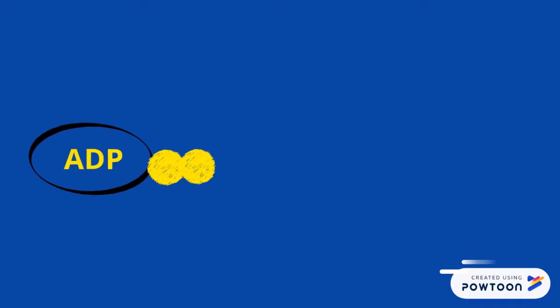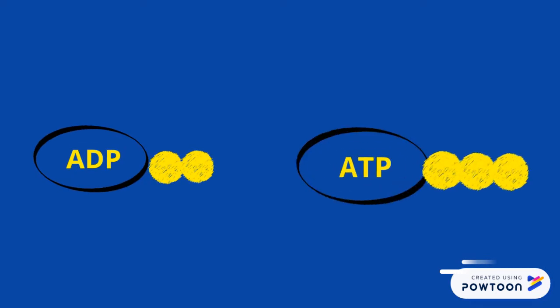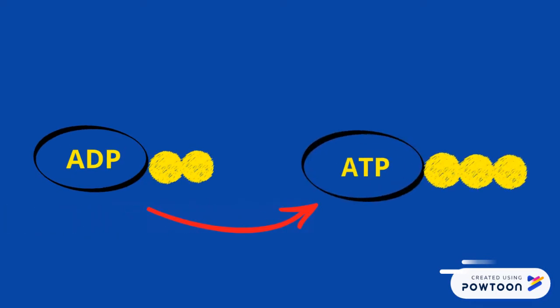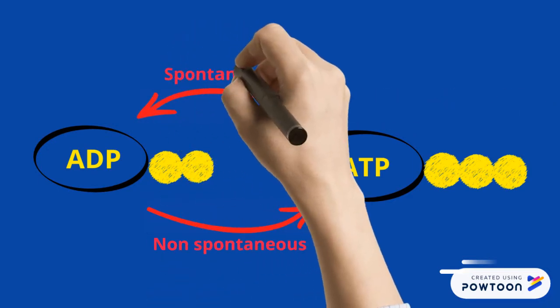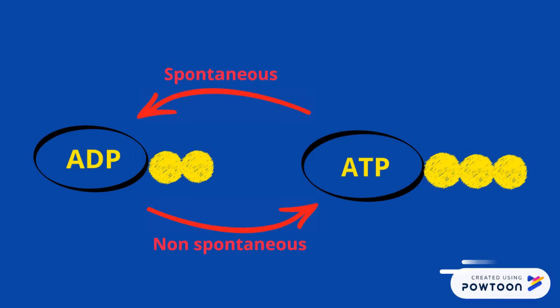To form ADP into ATP, the reaction is non-spontaneous because it requires additional energy to add the phosphate. The reaction from ATP to ADP is spontaneous because it releases energy — therefore, it does not need additional energy to break off the phosphate.